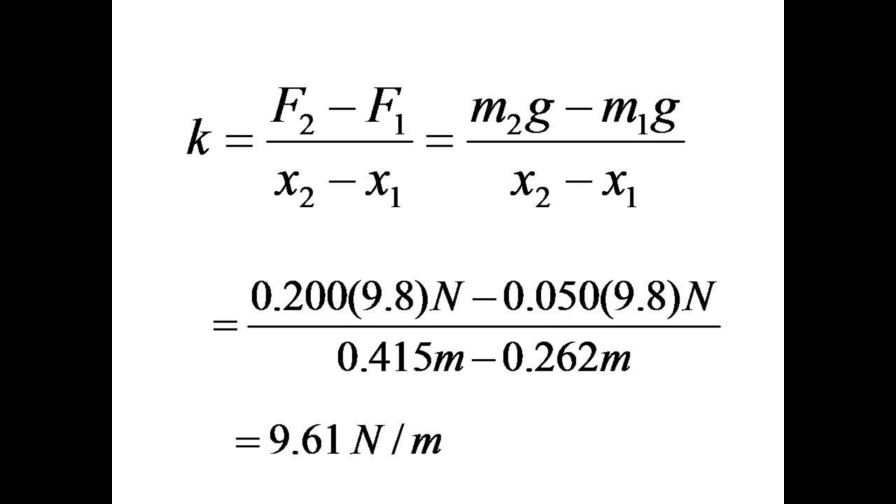Calculate k by converting the masses into newtons of force with m times g, taking the difference in forces and dividing by the difference in positions.